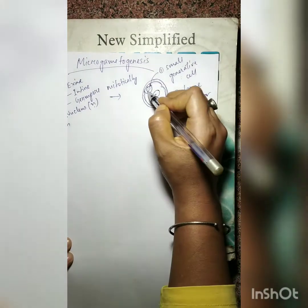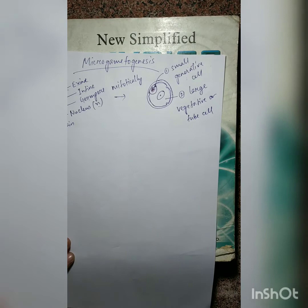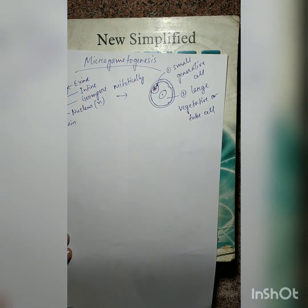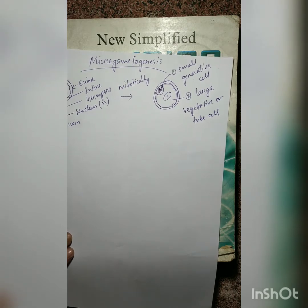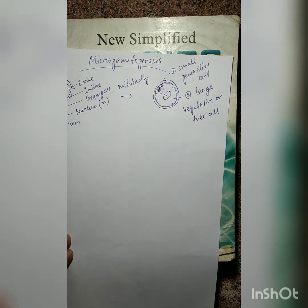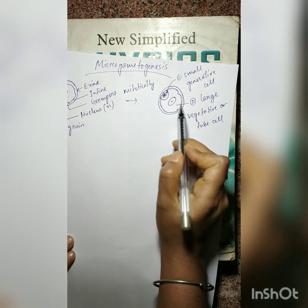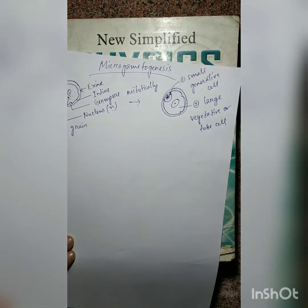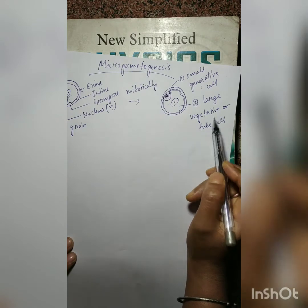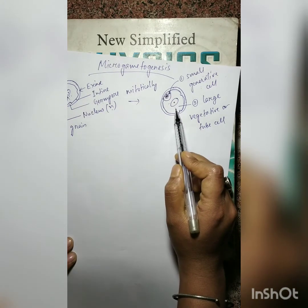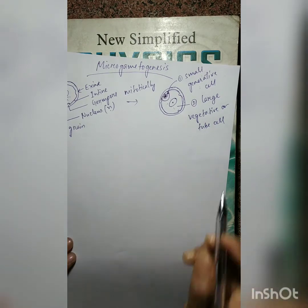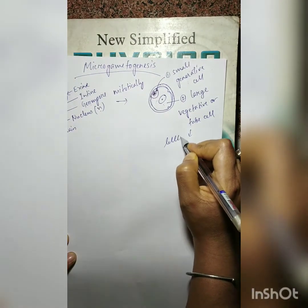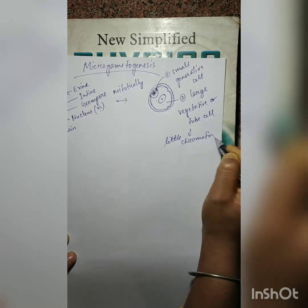Now this large vegetative or tube cell nucleus has comparatively little chromatin, that is your little DNA. And the way we are representing the structures, it has got certain meaning. This large vegetative or tube cell nucleus has comparatively little chromatin.